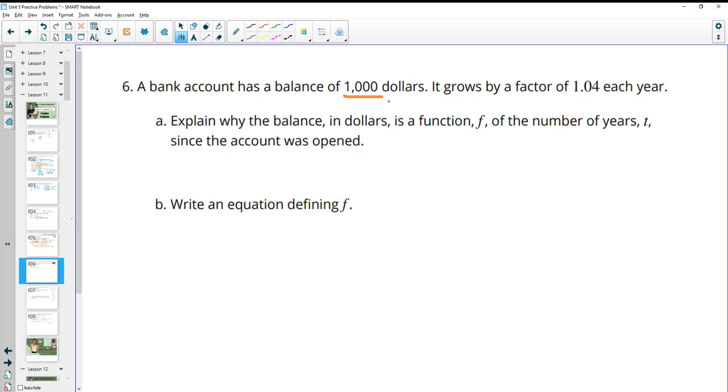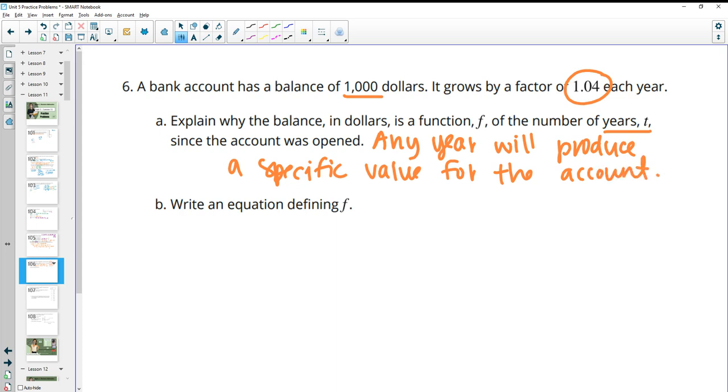Number six, a bank account has a balance of $1,000. It grows by a factor of 1.04 each year. Explain why the balance in dollars is a function of the number of years since the account was opened. So this is because any year will produce a specific value for the account. So you can be like, all right, after four years, how much is in the account? There's a specific answer for that. There's not multiple different answers. So each year produces one amount. And then write the equation of this. So we know that we do the initial amount. And let's do F(T) equals the initial amount times the growth factor. So 1.04 and then to the T power.